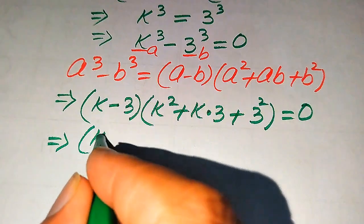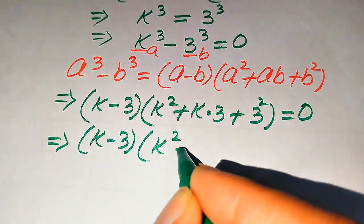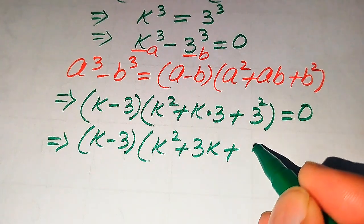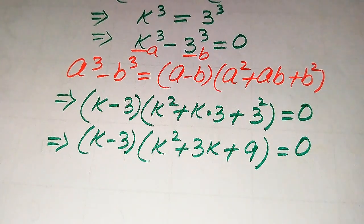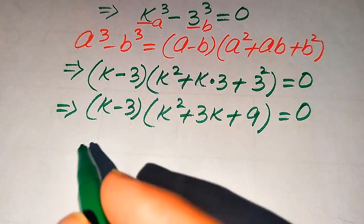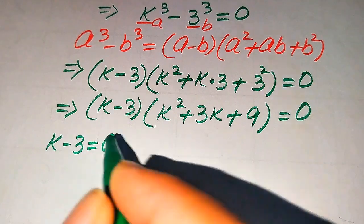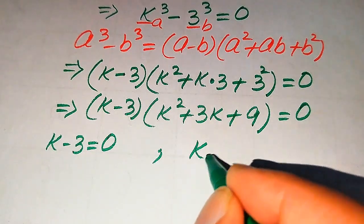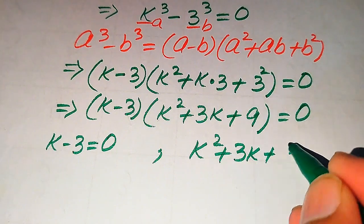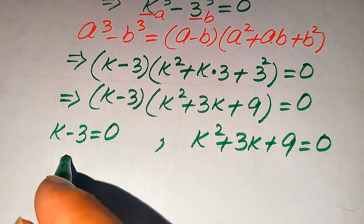After simplification it becomes (k minus 3)(k squared plus 3k plus 9) equals 0. We divide this into two cases: the first case is k minus 3 equals 0, and the second case is k squared plus 3k plus 9 equals 0.